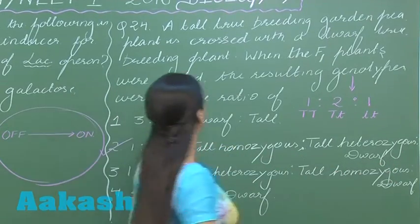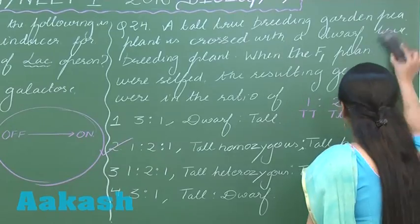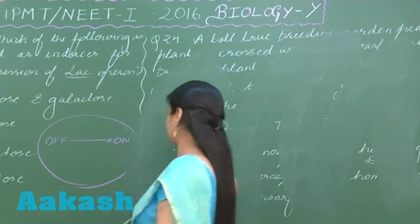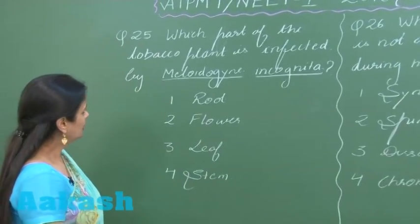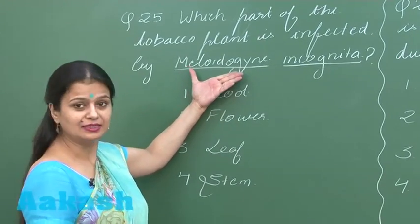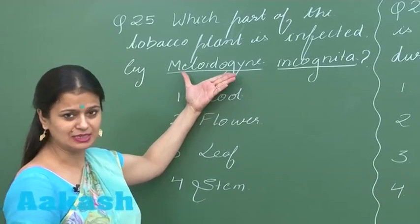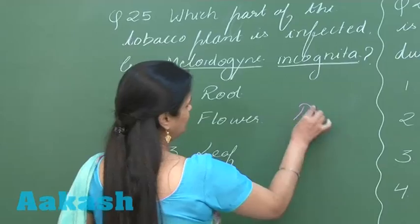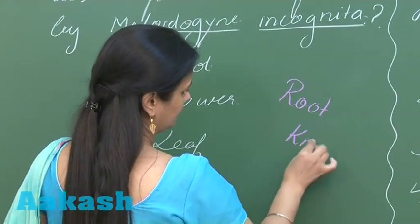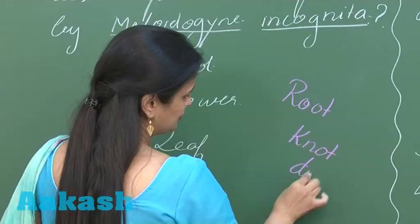Let's discuss question number 25 here. Now this is our nematode which causes a disease which is known as root knot disease. This is the disease.